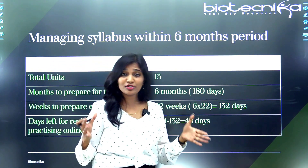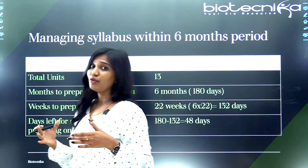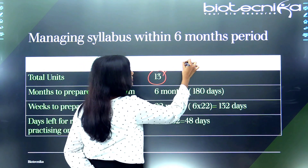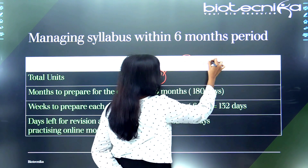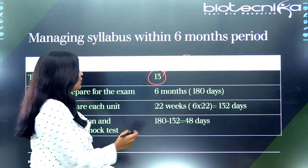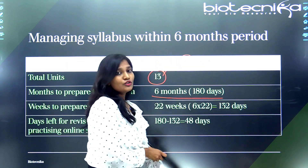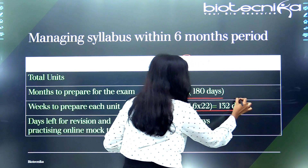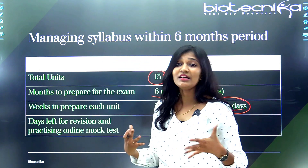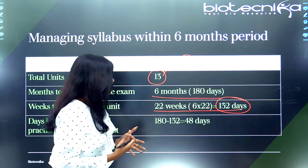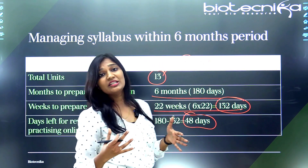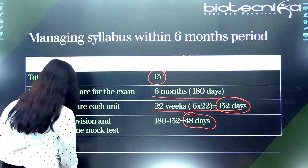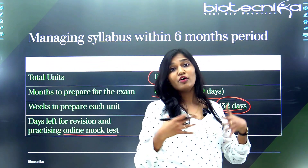So we've understood which chapters to concentrate on and which to skip. Our preparation duration is 180 days or six months. I've given a plan for 22 weeks, which is 132 days. The remaining 48 days you will use to revise all 10 units thoroughly. Along with that, you will practice online mock tests for your improvement. If you follow all these things, you can literally finish your preparation within six months.